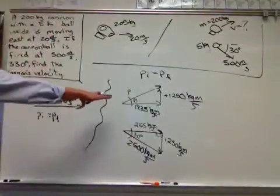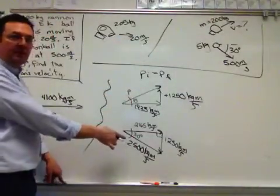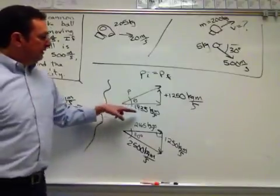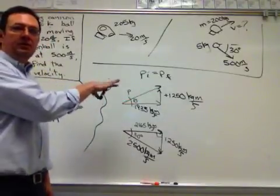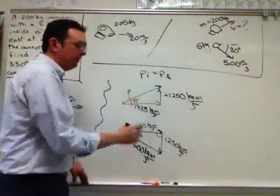So you have this momentum for the cannon, that momentum of the ball. You have the two components, x and y components. You can now put those two together, get the hypotenuse and the direction with the angle.